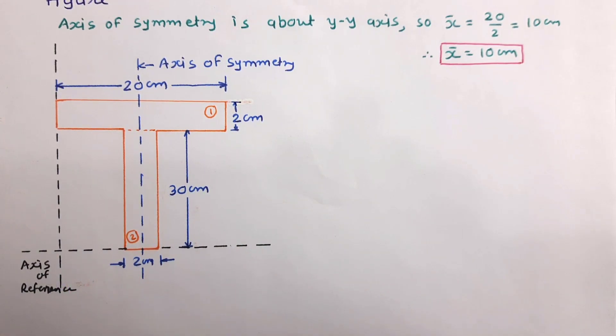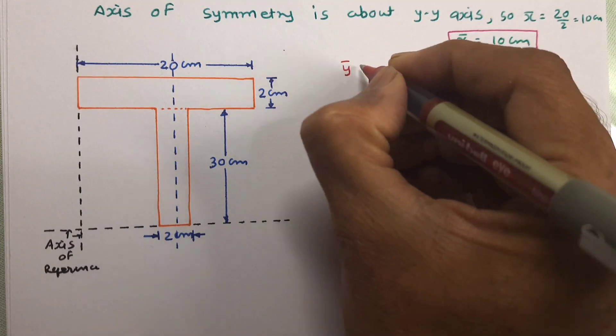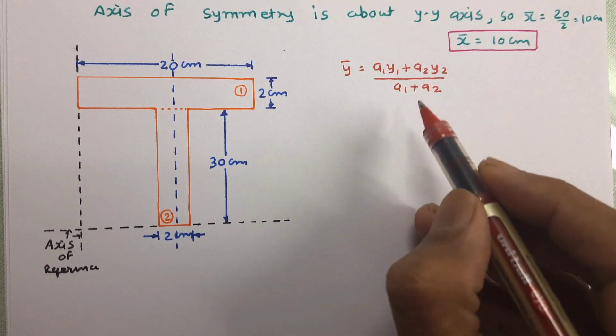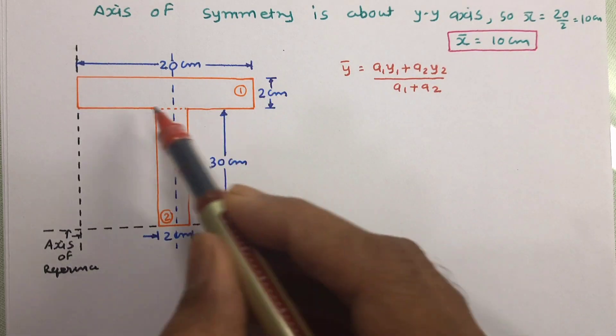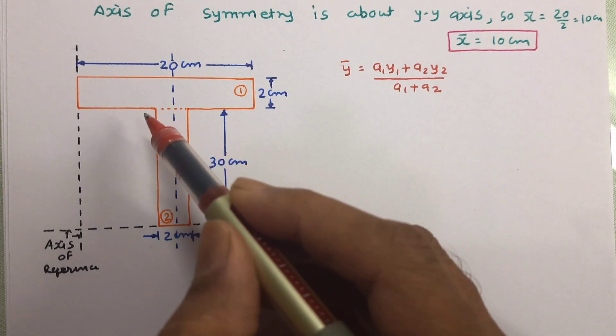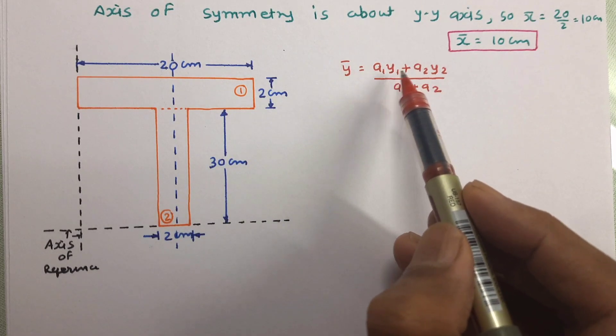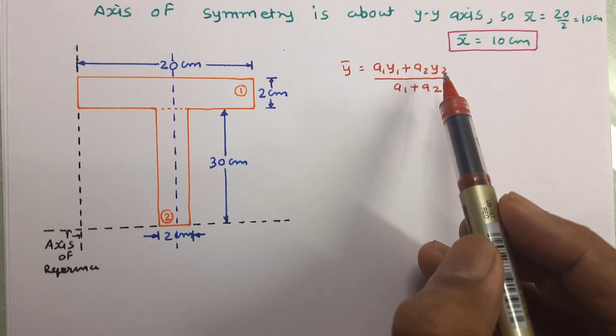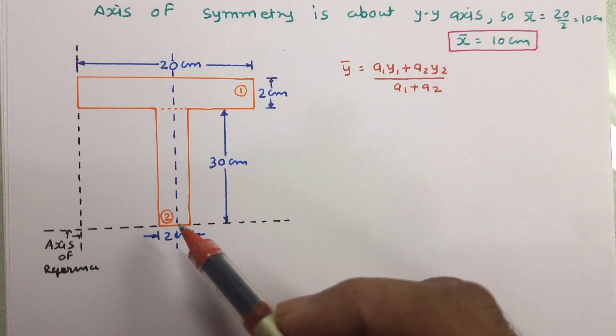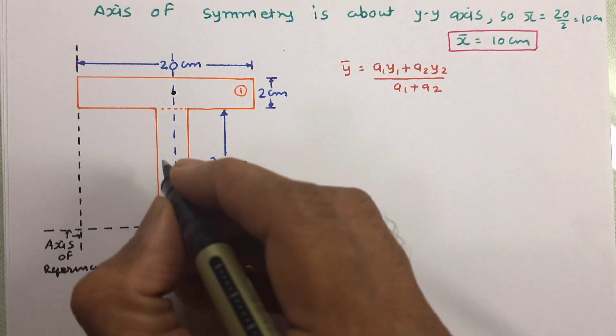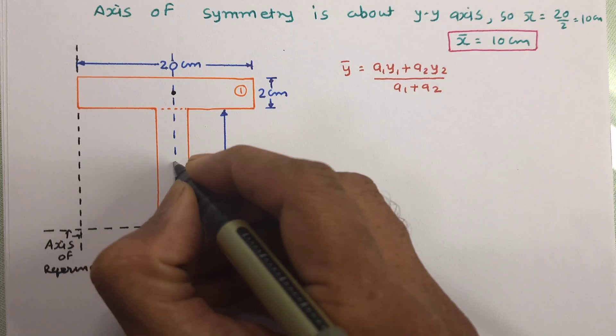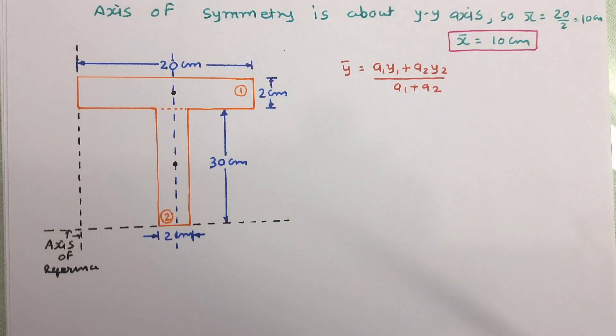Now let us write the equation to work out y bar. So this is the equation for y bar. Here a1 is the area of this first part, a2 is area of this second part. And y1 and y2 are the distance of centroid of part 1 and part 2 from x axis. This point is the centroid of first figure and this is the centroid of second figure. So now let us work out a1, a2 and y1, y2.